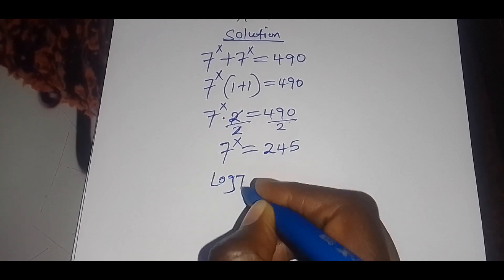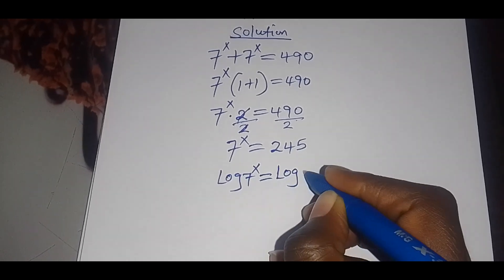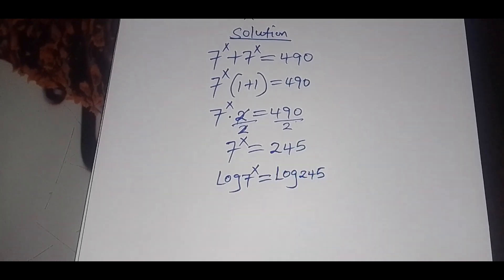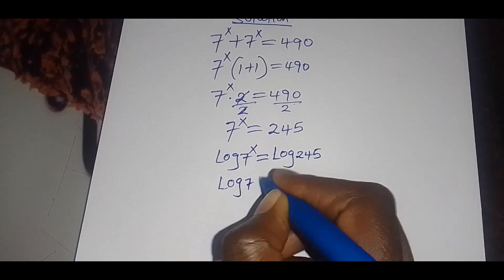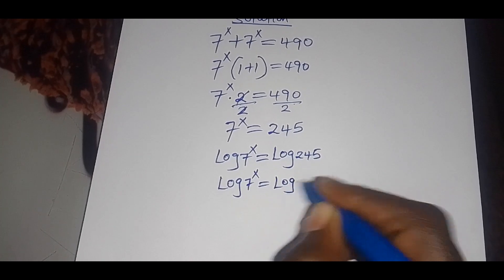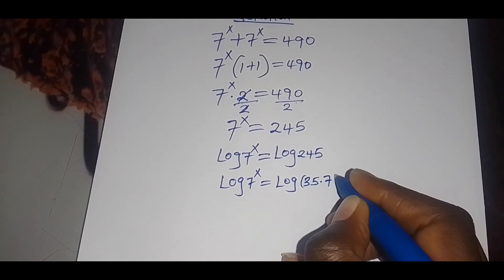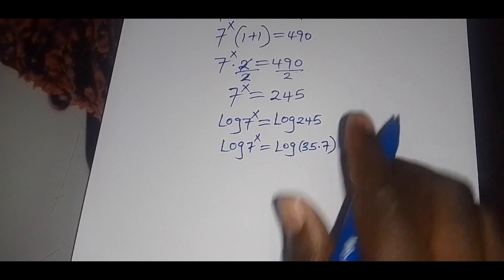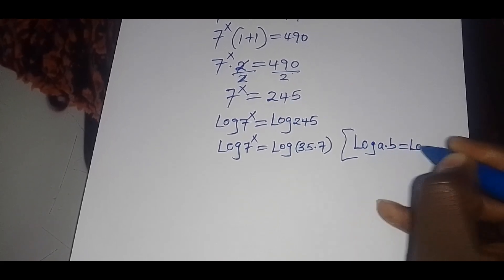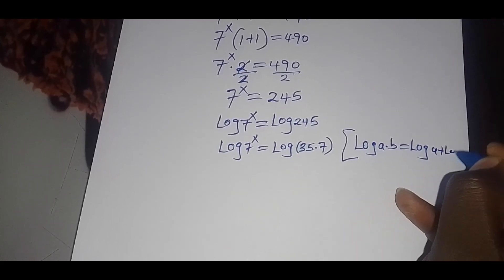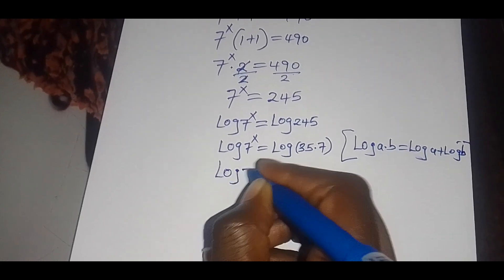Now to solve for the value of x, we introduce the natural logarithm. So that will have log(7 raised to power x) equals log(245). Now 245 can be expressed as 5 multiplied by 7. And applying the logarithm property: if you have log(a multiplied by b), this can be expressed as log(a) plus log(b).